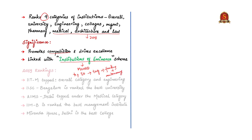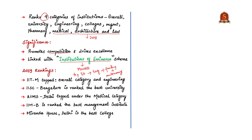Coming to the news, IIT Madras was declared the best engineering institution and also topped the overall category. Indian Institute of Science Bangalore was declared the best university, while AIIMS Delhi topped the medical category. IIMB was adjudged the best management institute, and Miranda House Delhi is ranked as the best college.